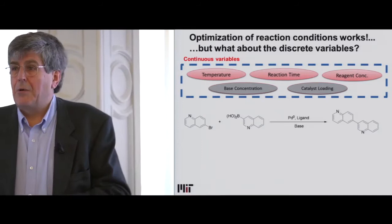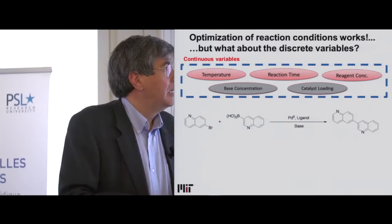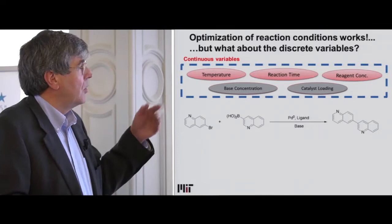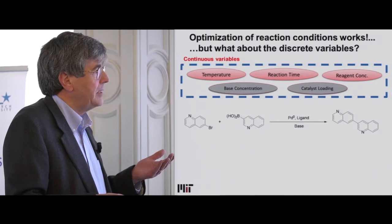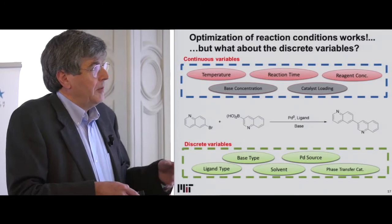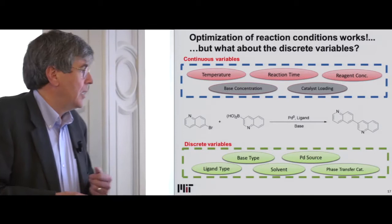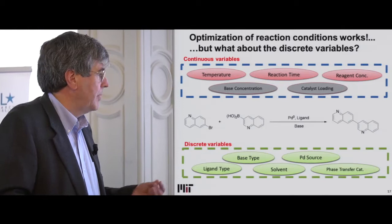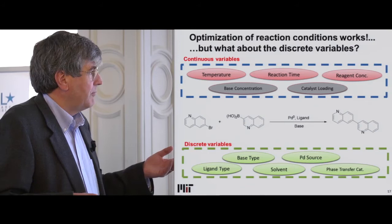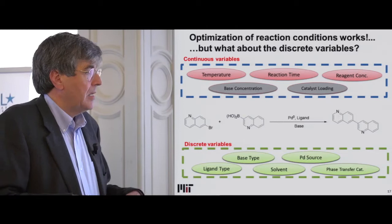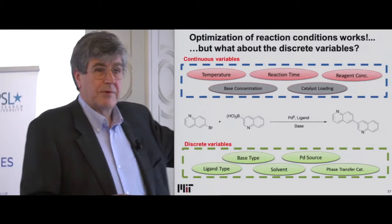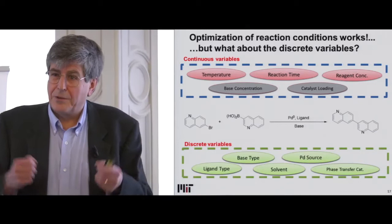I showed how we can optimize things when we change concentration and temperature. But as a chemist, there are lots of other things you would like to do. In addition to continuous variables, if you think about a catalytic reaction driven by a palladium catalyst, you also can change the ligand, the palladium source, the type of organometallic, the solvent, the catalyst, the phase transfer catalyst, and the base. These are discrete variables. It's very easy to dial temperature or flow rate, but how do you automate those discrete variables? This is where segmented flow and droplet microfluidics become a very useful tool.